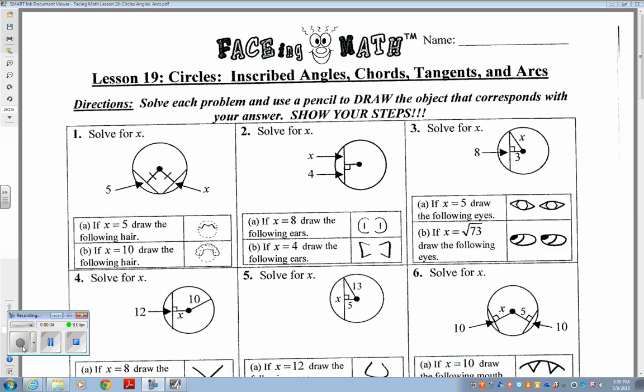Okay, to help you with the facing math activity that I left with you to complete with the sub, you just need to know your properties with chords, tangents, and angles dealing with circles. So all the color notes that you have, you should use that to help you and assist you. It's just applying the properties. Some of these do not require math, but you can use the space that they have in the box to get the answer.